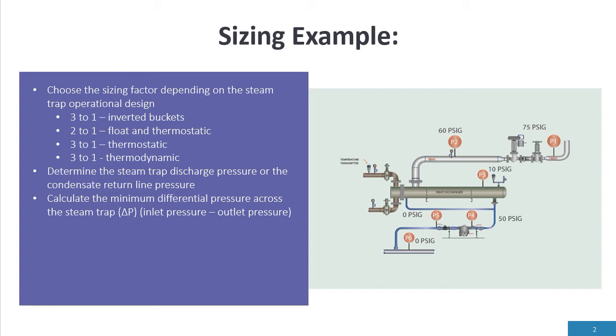For example, inverted buckets are three to one. What does that mean? If my condensate capacity is 200 pounds per hour, then I take three times 200 or 600 pounds per hour. So I want to select the steam trap for 600 pounds per hour in the capacity chart.